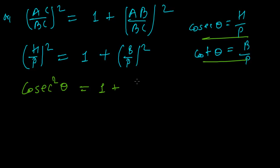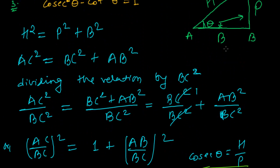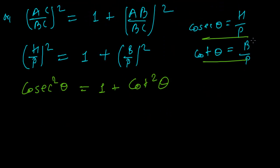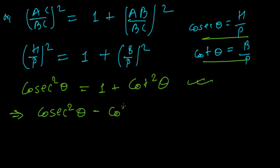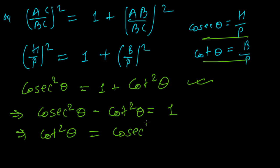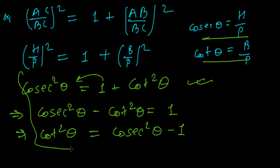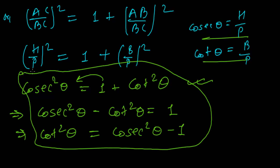So cosec squared theta equals one plus cot squared theta. This is our required equation. If we rearrange this, we get cosec squared theta minus cot squared theta equals one. And again if you rearrange, cot squared theta equals cosec squared theta minus one. These are really important trigonometric identities that you must understand, remember, and learn.